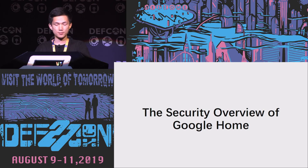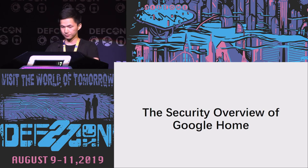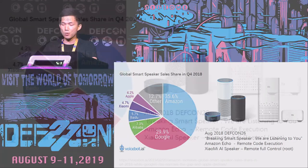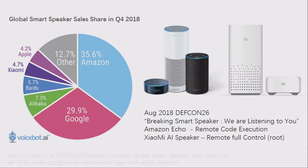Smart speakers are the most popular smart home devices of the past two years. Amazon, Google, and some Chinese companies are the main players in this field. In Q4 2018, Amazon and Google's market share became very similar. After we shared how to break Amazon Echo and Xiaomi AI speaker at DEF CON 26, we began to study the security of Google Home smart speaker.